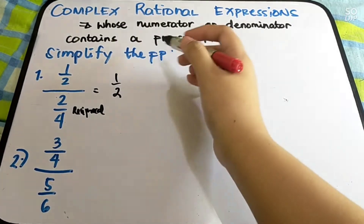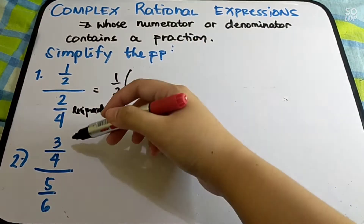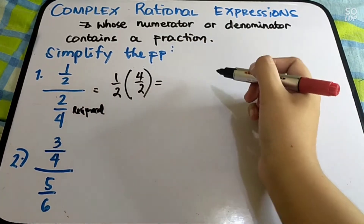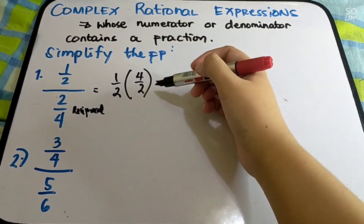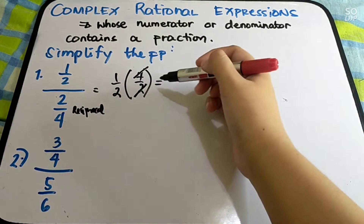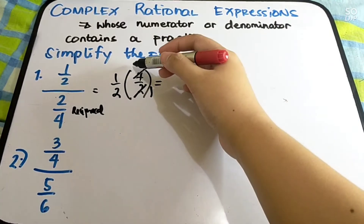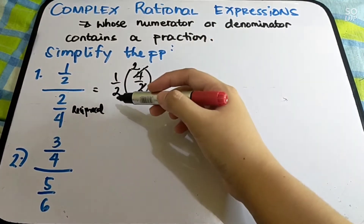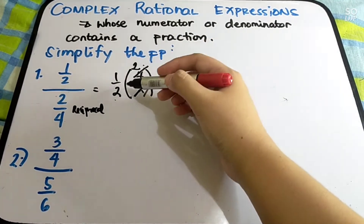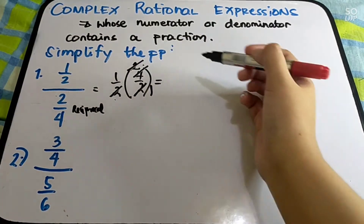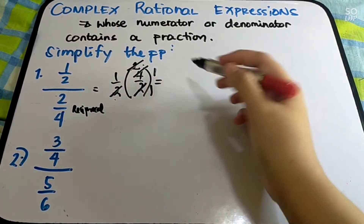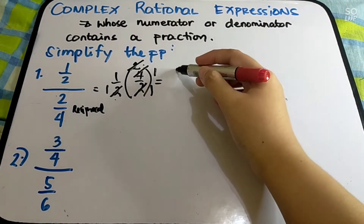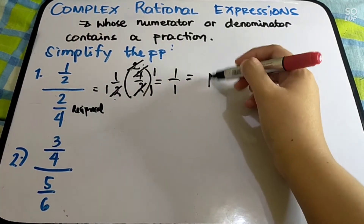The reciprocal — kabaliktaran — then change it into multiplication. So the reciprocal of 2 over 4 is 4 over 2. Then you can do cancellation — look up and down — so 4 and 2 are divisible by 2. So 2 becomes 1, and 4 becomes 2. Then 2 and 2 are also divisible, so they cancel out, becoming 1. So 1 times 1 is 1, giving us 1 over 1, which is equal to 1.